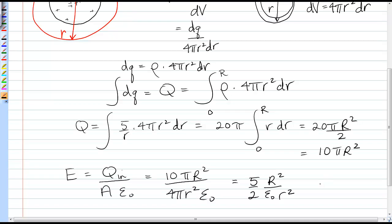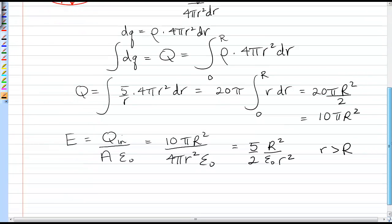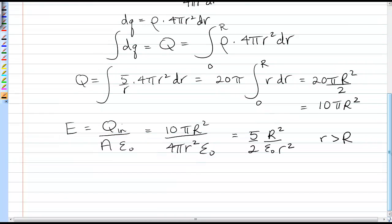That's the field for r greater than R. You can see it does act like a point charge. Even though the total charge is 10πR², that's a constant. This field drops off as 1/r², just like a point charge.